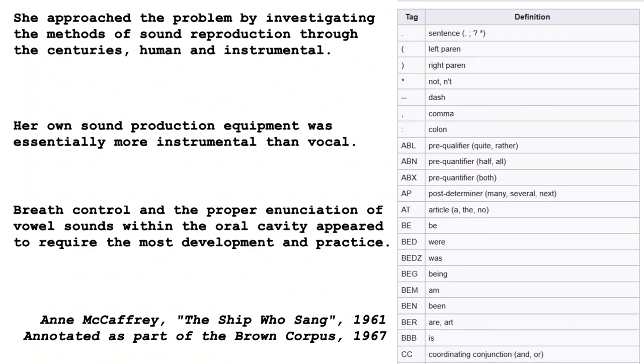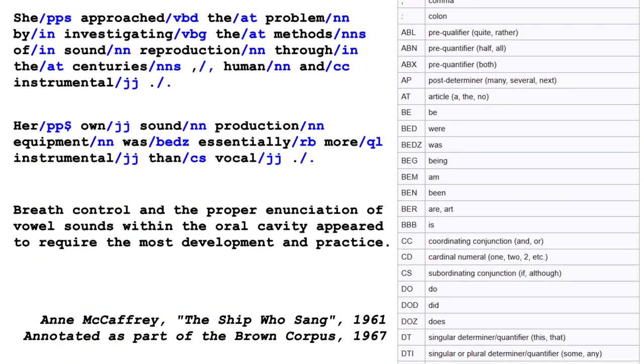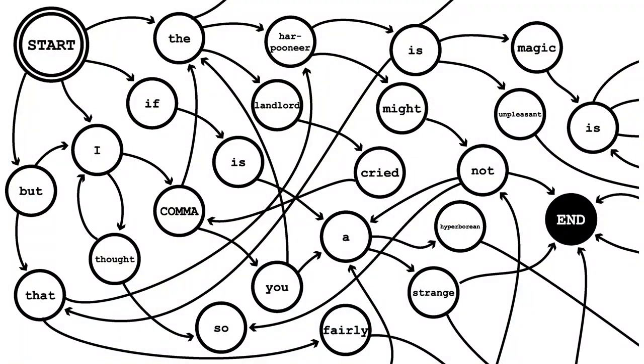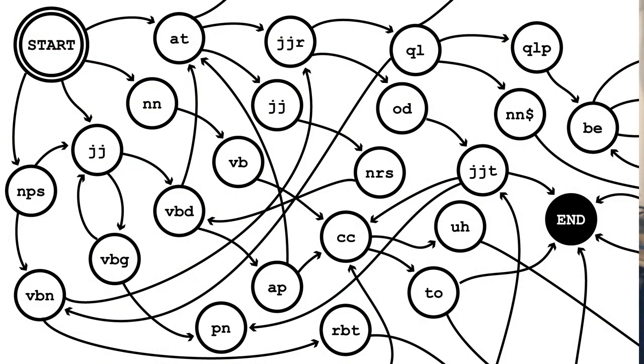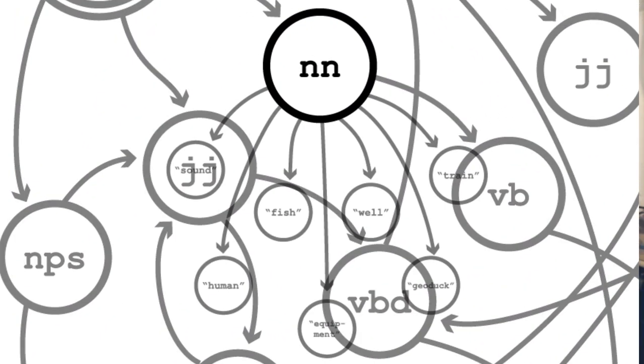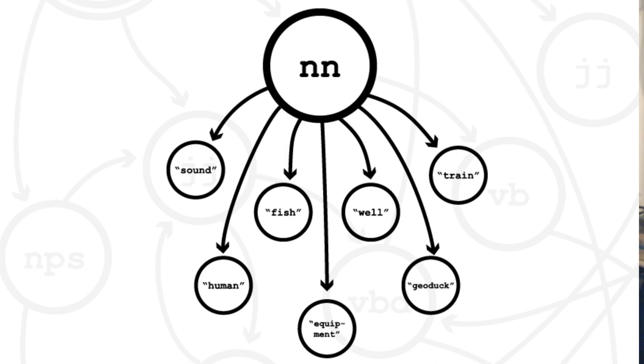But what if we build a corpus of example sentences, and have expert linguists annotate each one with parts of speech? Now we can build a Markov chain like before, but instead of showing which words are likely to follow each other, we show which parts of speech are likely to follow each other. This puts hard numbers onto observations like: an article is likely to be followed by a noun, less likely by a gerund, and never by a verb. The corpus also gives us a list of every word for every part of speech, and how likely each one is. Fish and geoduck are both ways that a noun can manifest, but they're not equally likely. Putting these two sources of information together, we get our hidden Markov model.